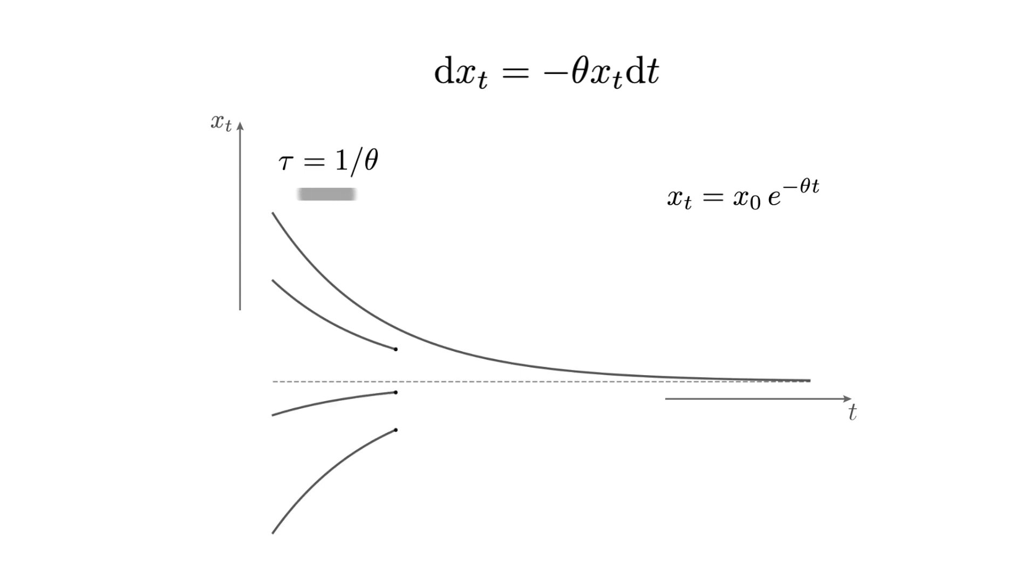The inverse of theta, denoted here by tau, is the time during which x decreases in magnitude by a factor of e. Tau is also called the relaxation timescale.